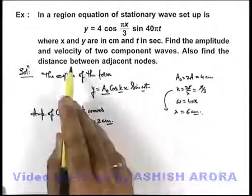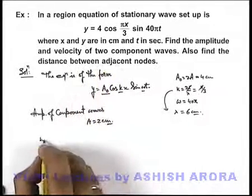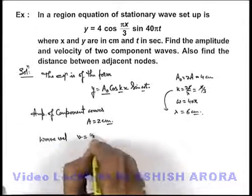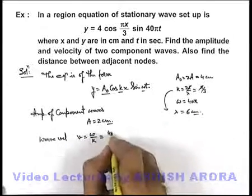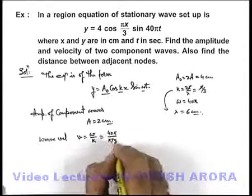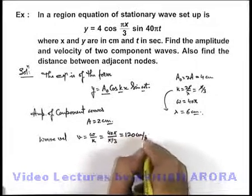We are required to find the velocity of component waves. As we know, wave velocity can be given as v = ω/k. Here we have the value of ω as 40π and the value of k as π/3. This can be given as 120 centimeters per second.